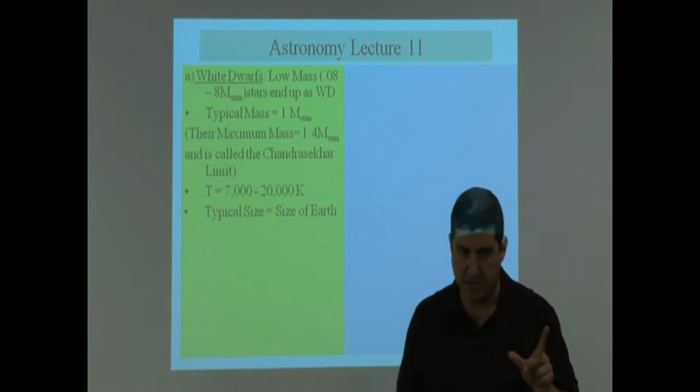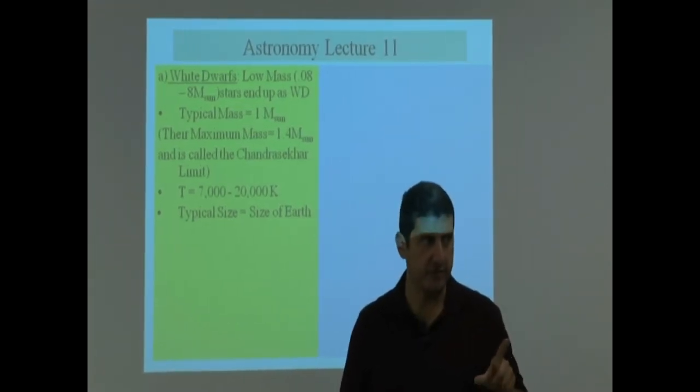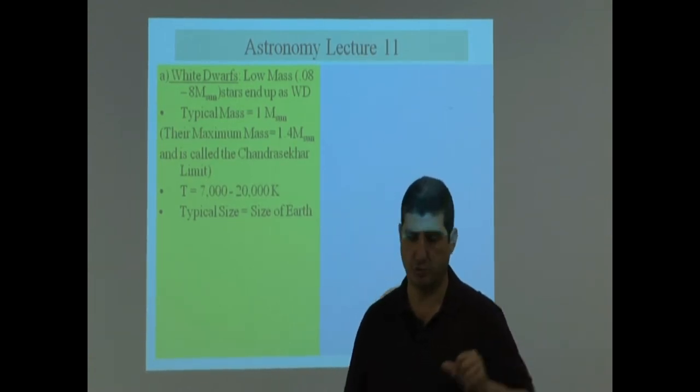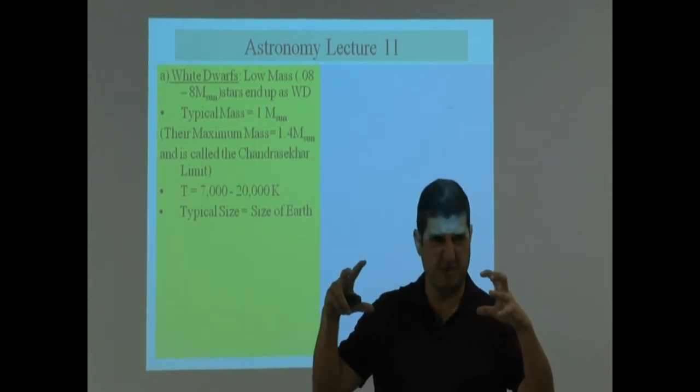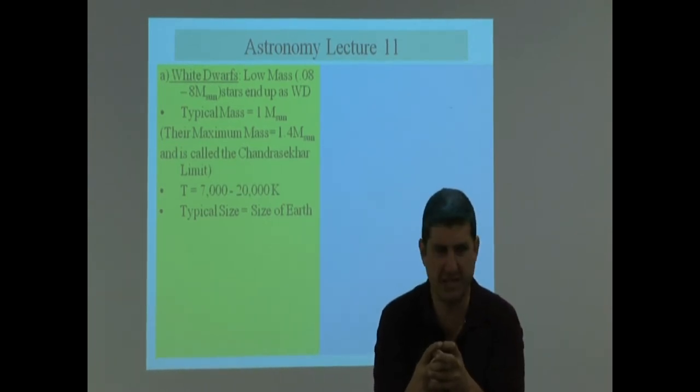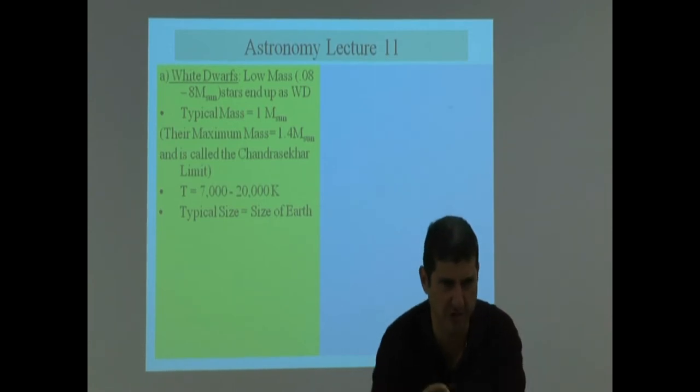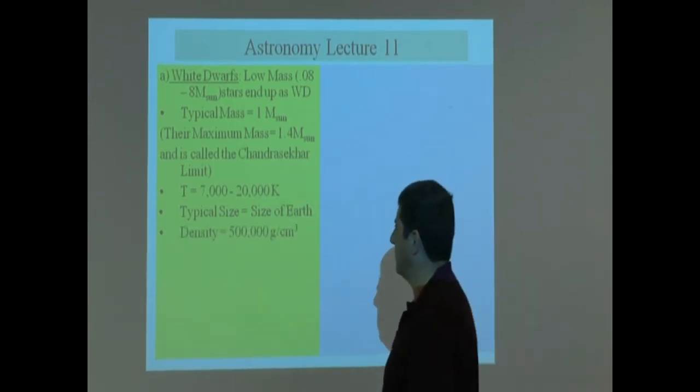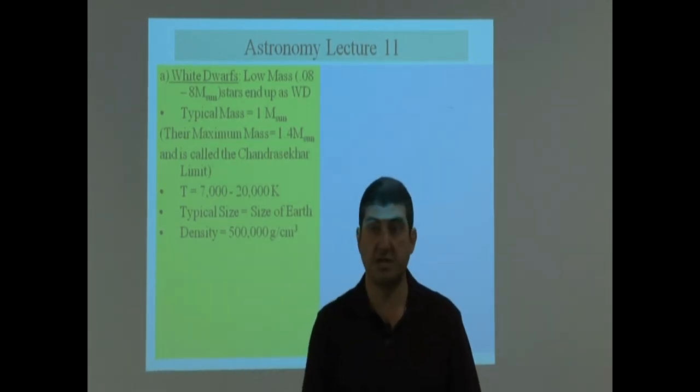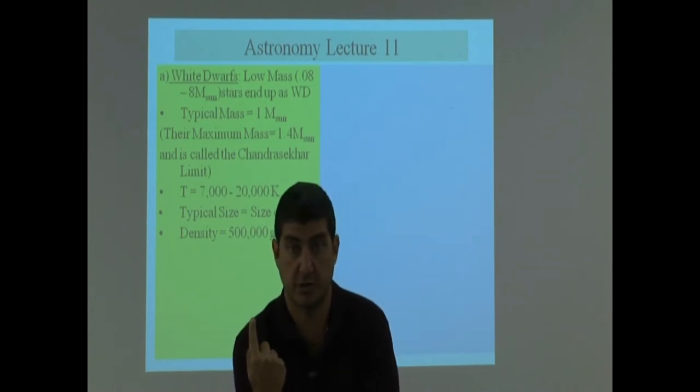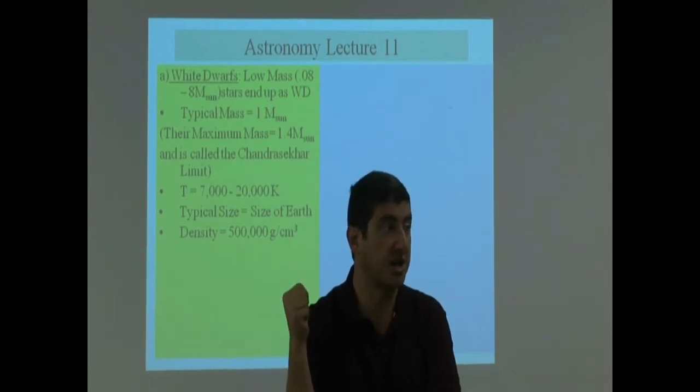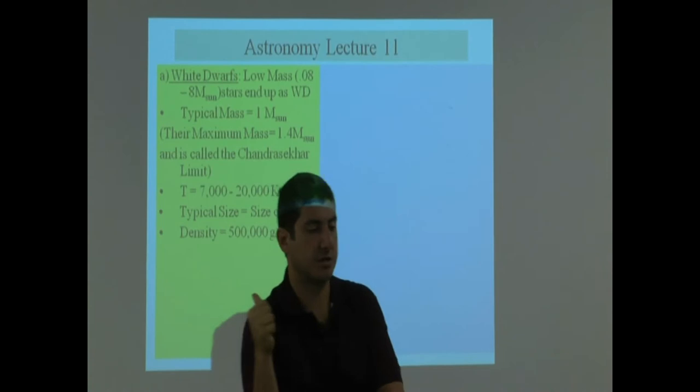Now imagine what that means. These guys have the same as the mass of the sun, but they're equal to the size of the earth. So imagine taking the mass of the sun and compressing it down to the size of the earth. That means they have huge density, very dense. What is their density? 500,000 grams per cubic centimeter. The density of water is one gram per cubic centimeter. The density of the earth is five and a half grams per cubic centimeter. These things are many hundreds of thousands of times denser than the earth.